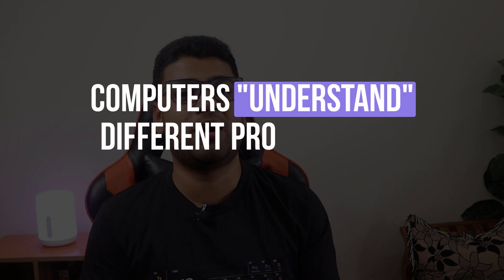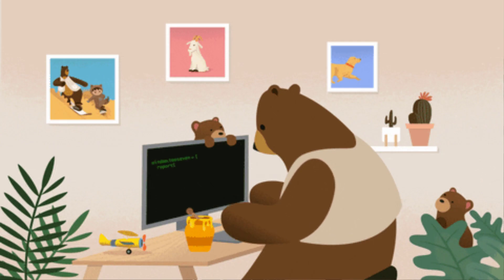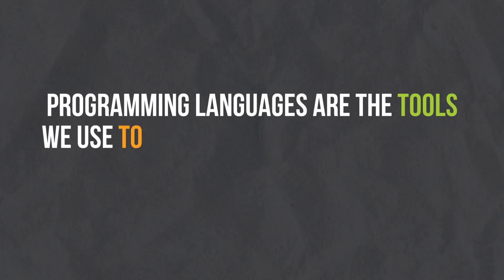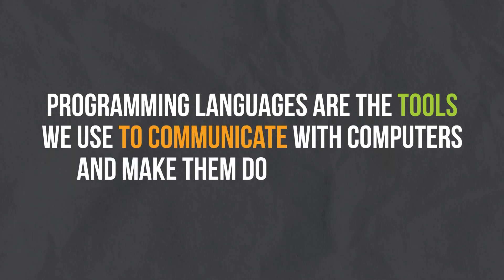Just as people speak different languages, computers understand different programming languages. When you write code in a programming language, you are essentially telling the computer how to perform a specific task — whether it's solving a math problem, building a web page, or playing a game. So programming languages are the tools we use to communicate with computers and make them do what we want.